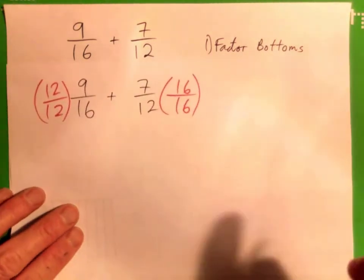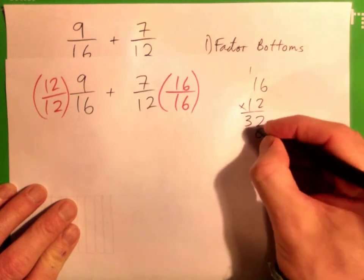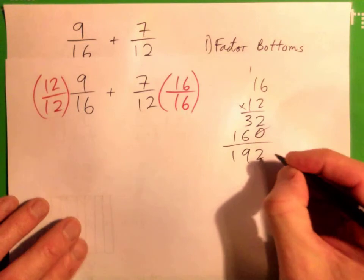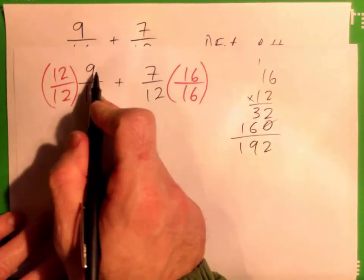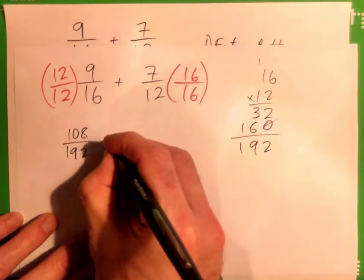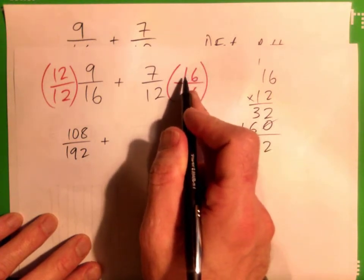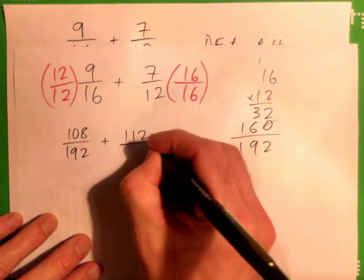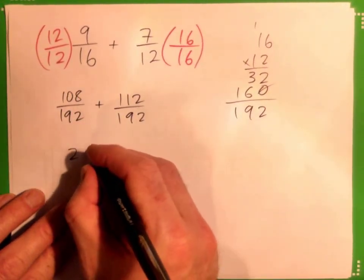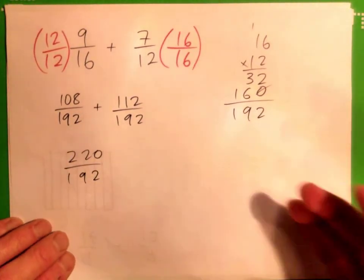Now if I did it the long way, holy moly, 16 times 12, multiply by, it's 2, carry 1, that's 3, put a 0 down, 1 times 6 is 6, 1 times 1 is 1, that's 192, my gosh. And 12 times 9 is 108 over 192 plus, and this is 42 and 70, 112 over 192, which gives me 220 over 192. Again, this is actually correct, it's just a lot of work, isn't it?